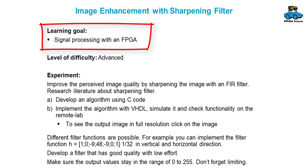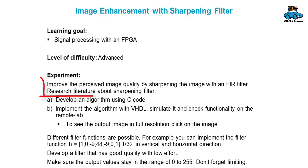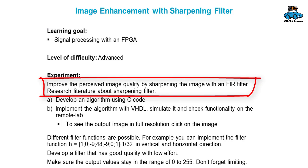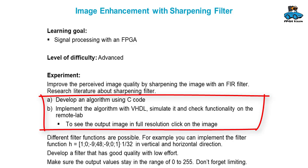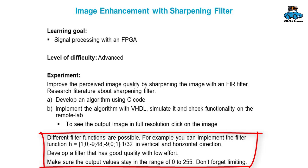An advanced experiment for signal processing with an FPGA is image enhancement, which you use to improve the quality of an image. You can have a look at literature about sharpening filters. First, develop the algorithm using C code, then implement the algorithm with VHDL. Simulate it and check the functionality with the remote lab. You can use different filter functions, and as an example one filter works quite well applied in both vertical and horizontal direction. Make sure that the output values of the filter stay in the range of 0 to 255 — so you need some limiting.